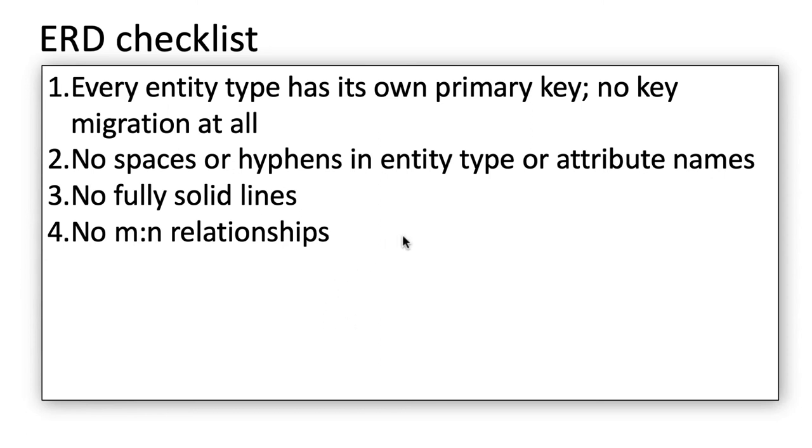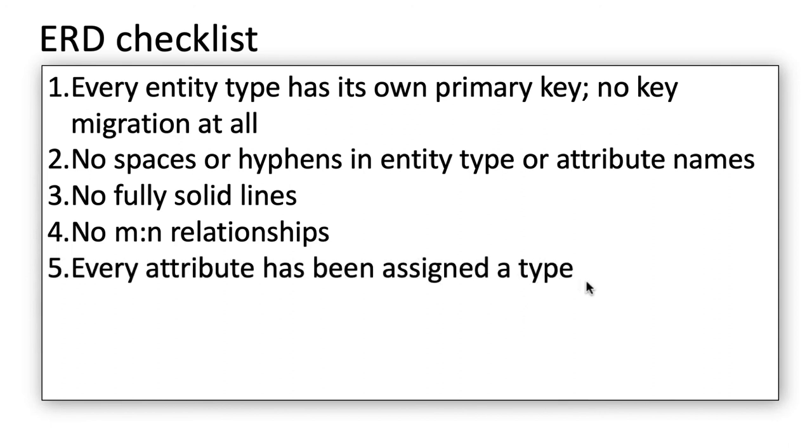Again, what I've said is that whenever there is a many-to-many relationship in the original description, you may initially draw it as an actual many-to-many relationship in your entity relationship diagram, but you must create an associative entity type for that many-to-many relationship. So ultimately, when you look at your final logical model, there should not be any many-to-many relationships at all because if there were any many-to-many relationships, you would have converted them into an associative entity and therefore the many-to-many would have got resolved into two one-to-many relationships. So that's again something very important.